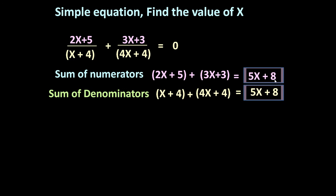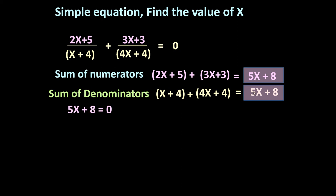If you see, the sum of numerators and sum of denominators are equal. If this condition is satisfied — sum of numerator and sum of denominator is the same — then using Vedic Mathematics we can simply write 5x + 8 = 0, so x = -8/5. This is the answer.